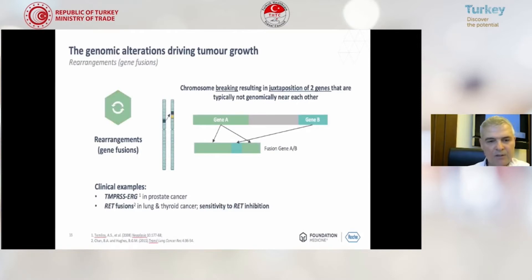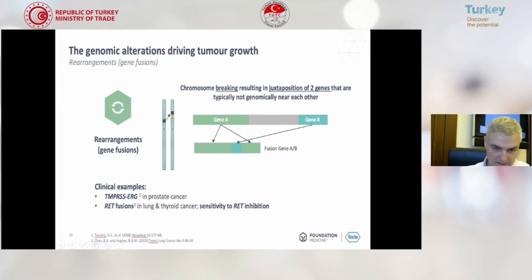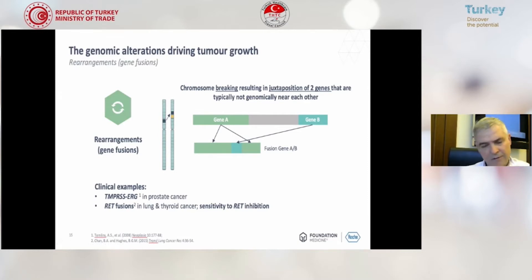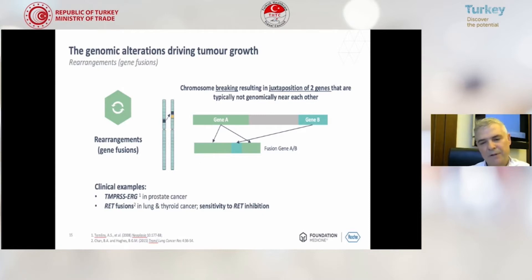Rearrangement mutation or gene fusions is another example. For example, RET fusions in lung cancer or thyroid cancer can be targeted with a very new drug which has come to market very recently.